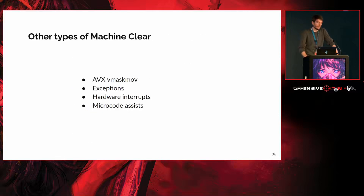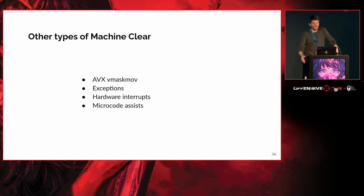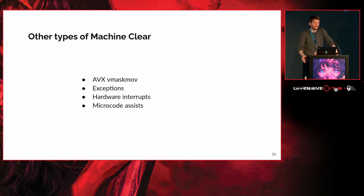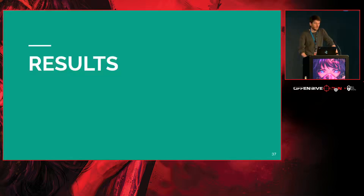If you really like this presentation, you can look at our paper. There are many other machine clear types covering corner cases of the processor — for example, complex masked move instructions, exceptions, other interrupts, and many microcode assists. Machine clears are a broad class of transient execution paths of the processor. Now we conclude with some results.